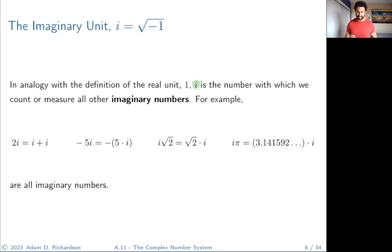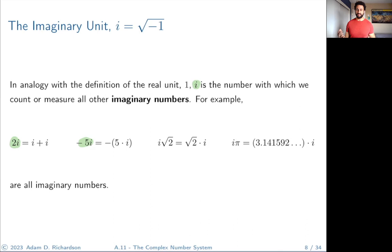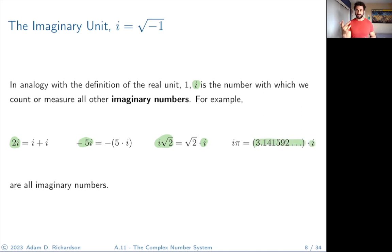Just like the real unit one, i is the number we use to count or measure imaginary numbers. Two i is i plus i — two imaginary units. Negative five i is the opposite of five imaginary units. i times √2 means you have √2 imaginary units. i times pi means you have pi imaginary units. You can count with these imaginary units.